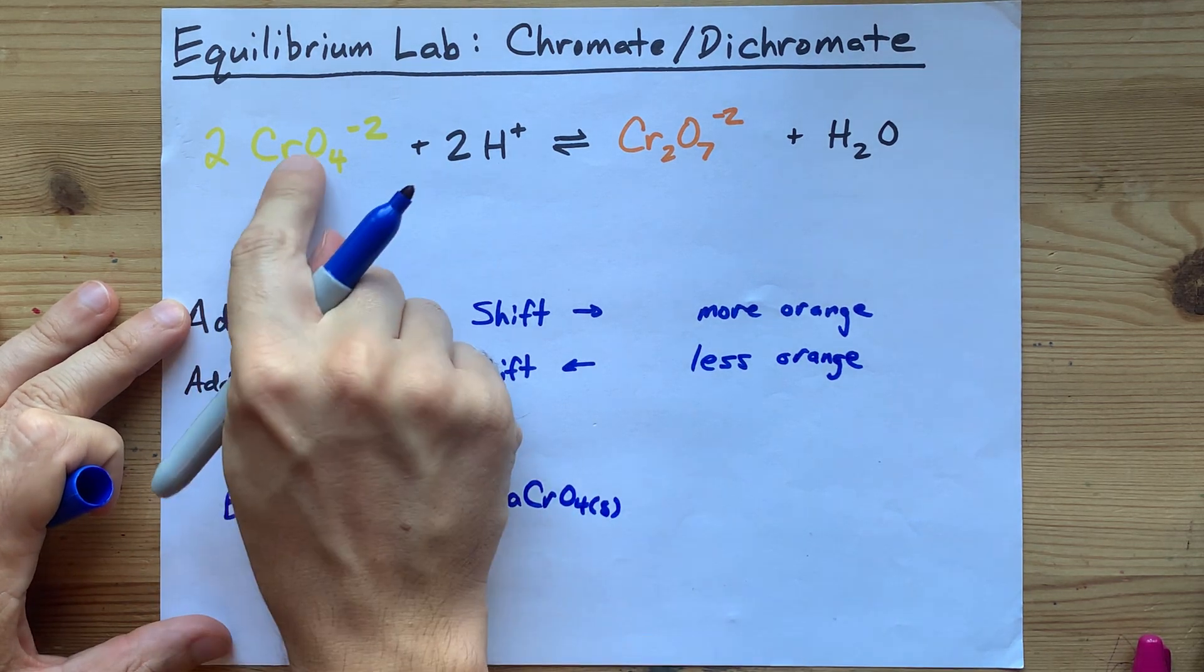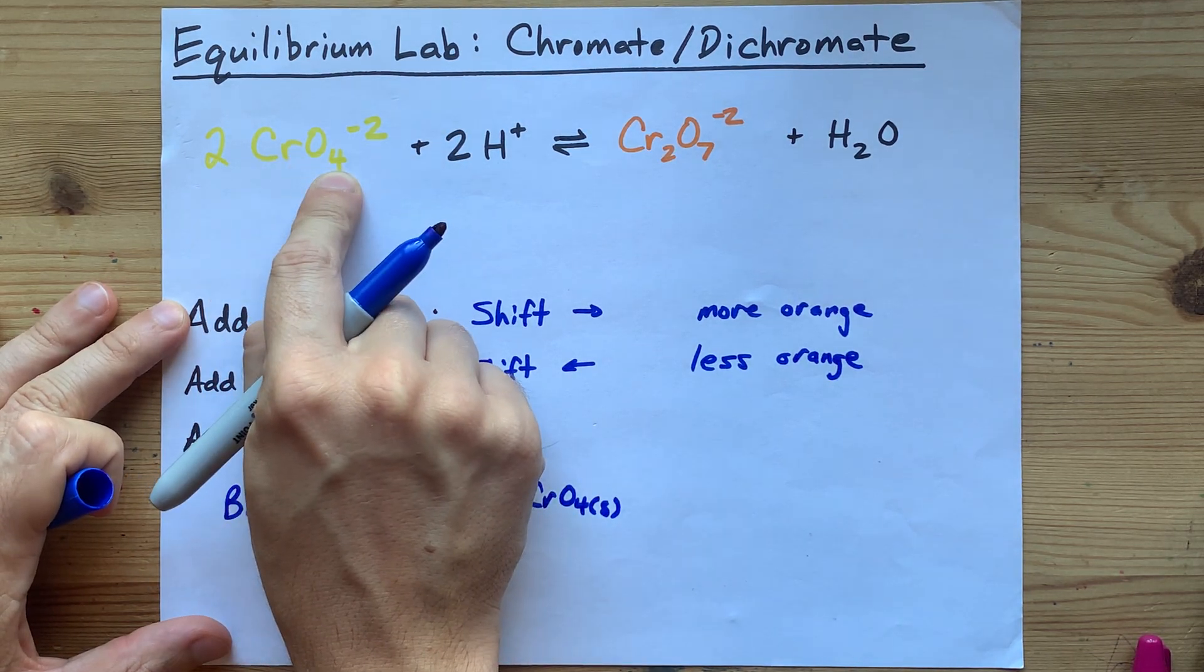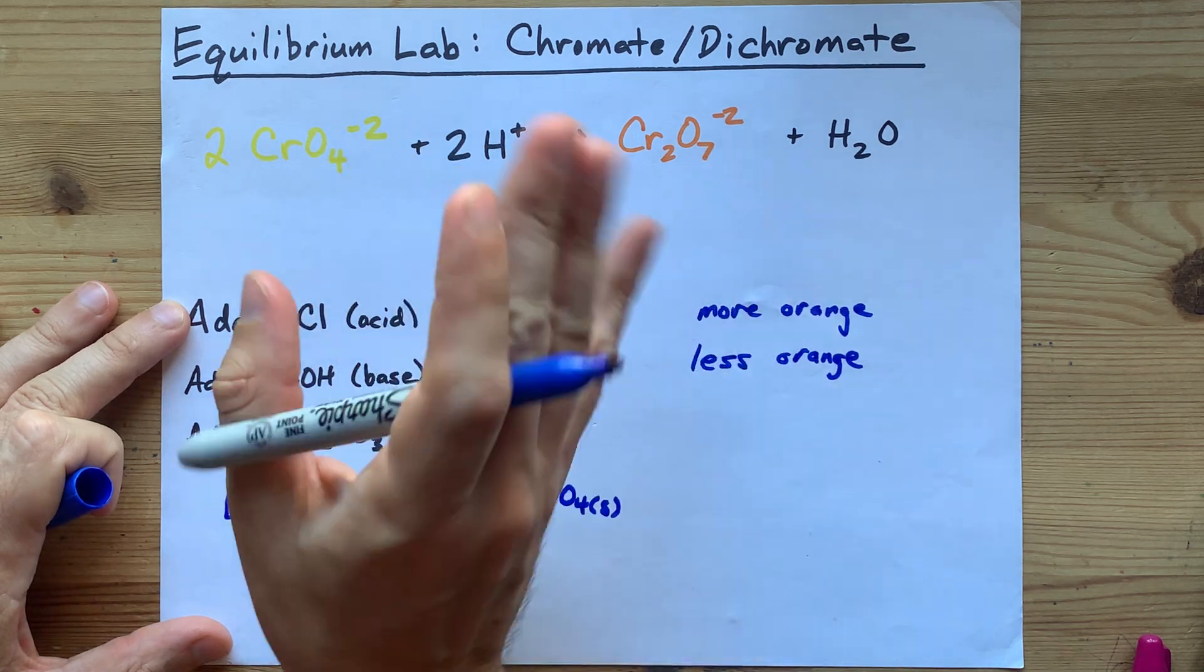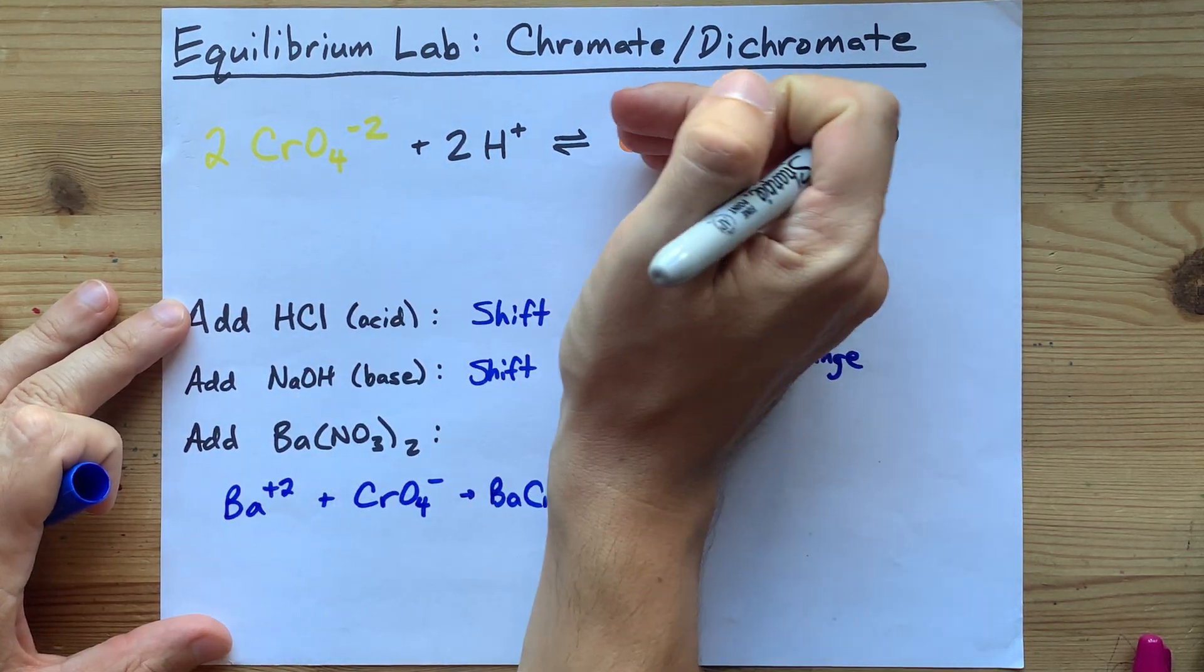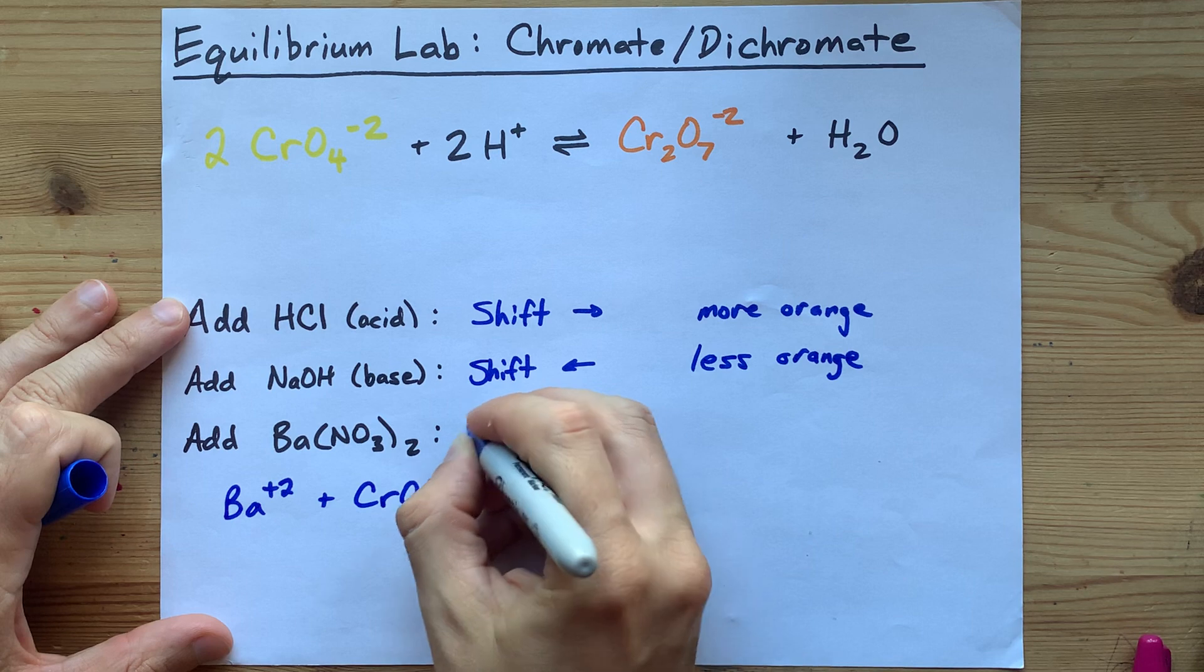So adding barium takes away CrO4. How are you going to replace the missing CrO4? Push the reaction slightly to the left.